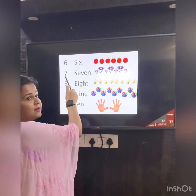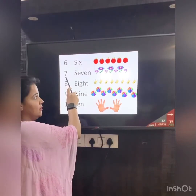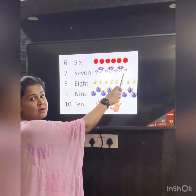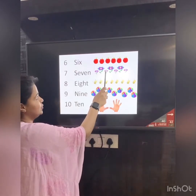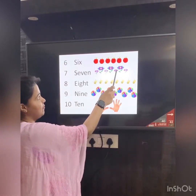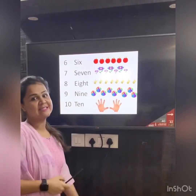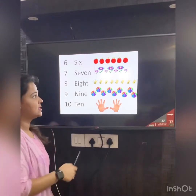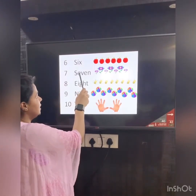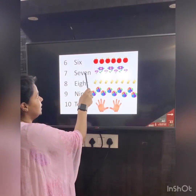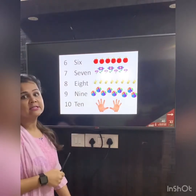Next number here is number 7. We have 7 flowers here — 1, 2, 3, 4, 5, 6, 7. 7 flowers. Let's see the number name: S-E-V-E-N. 7.